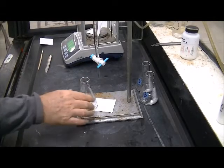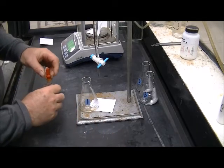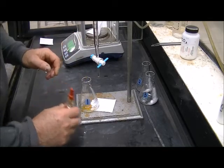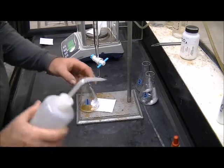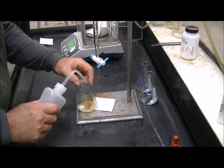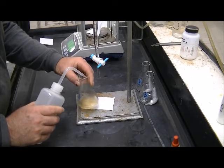This is the first sample for sample A, unknown A. I'm going to put in three drops of our indicator. And some water to help dissolve the solids. And make sure they're all washed down to the bottom of the flask.